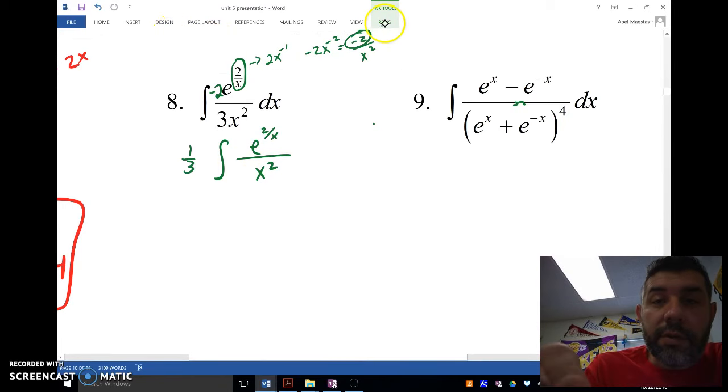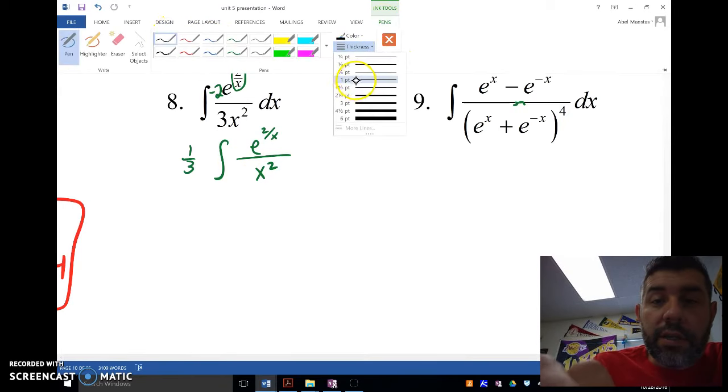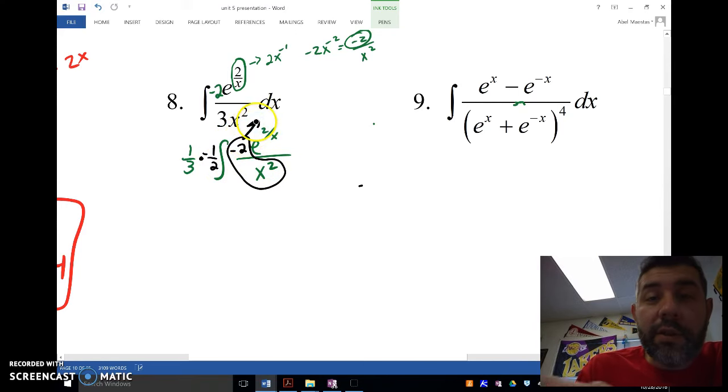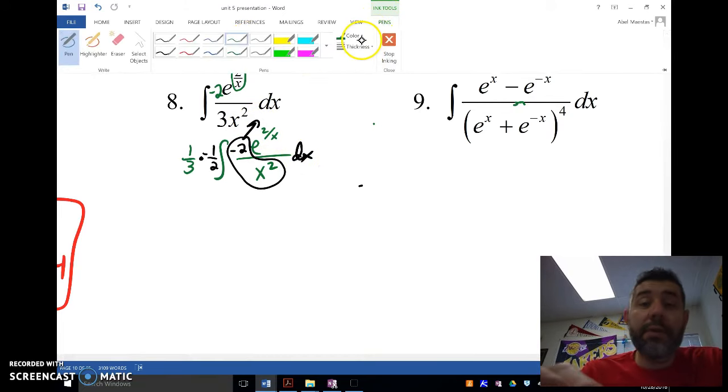So let's rewrite this. Let's write this as 1 third the integral from 4e to the 2 over x over x squared. And then what I'm going to do is I'm going to take and put my negative 2 here. And I'm going to multiply that by negative 1 half out here. So that way, this right here becomes my hook that I get rid of because that's what I had here.